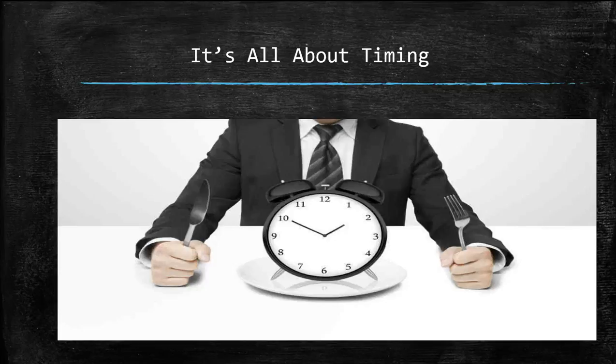If you are taking insulin 3 hours or more apart, you can correct for high blood sugar and give insulin for the carbs you will eat.